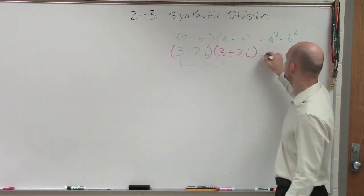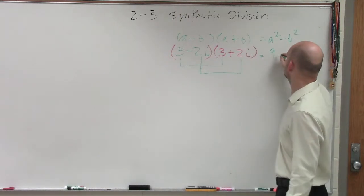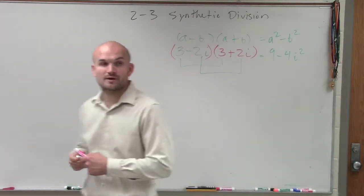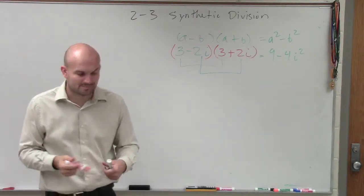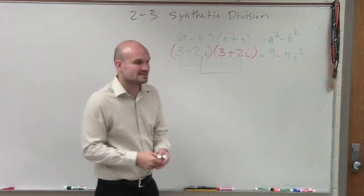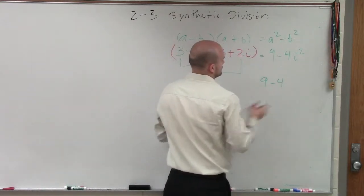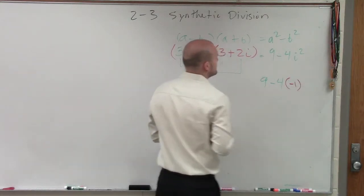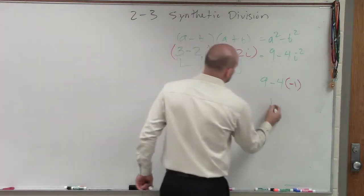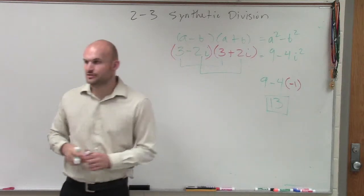What's a squared? Nine. What's b squared? Negative 4i squared. But remember, we went back and investigated that i squared represents negative 1. So negative 1 times negative 4 is going to be positive 4, and 9 plus 4 is equal to 13. And that's your final answer.